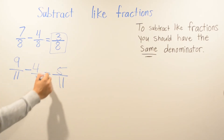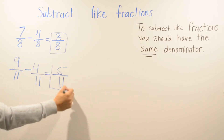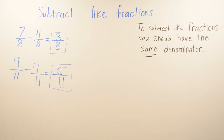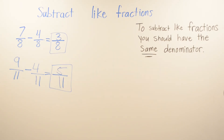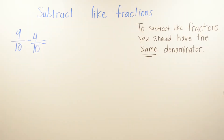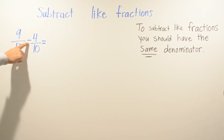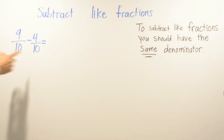9 minus 4 is going to be 5, so your answer is 5 over 11. For the next example we have 9 over 10 minus 4 over 10. We have the same denominator so we can go ahead and subtract.